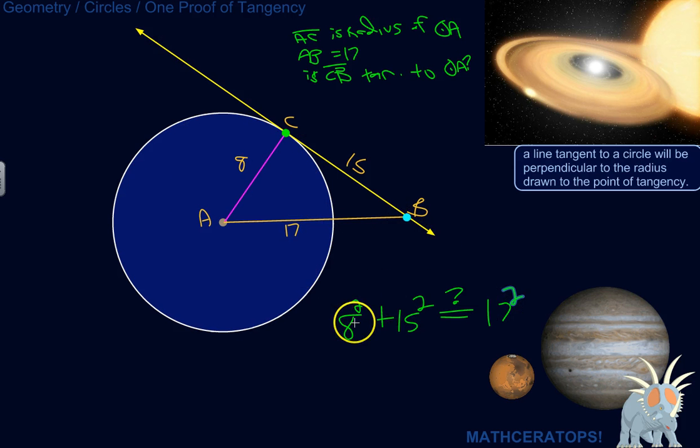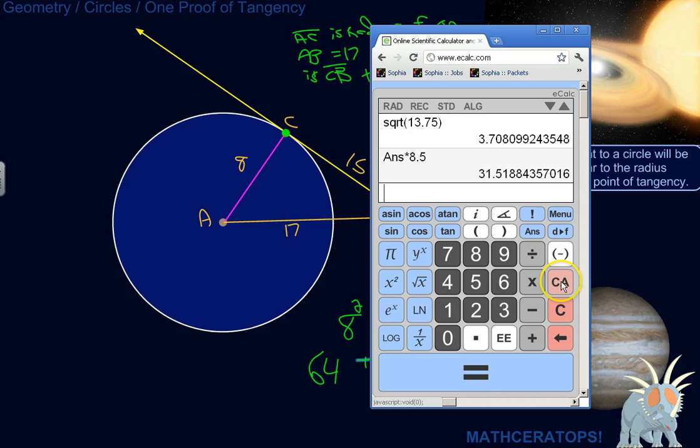Let's see if this is true. 8 squared is 64. What is 15 squared? That's 225.